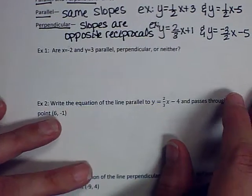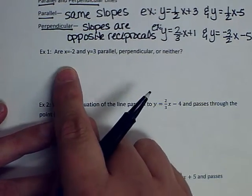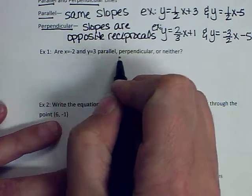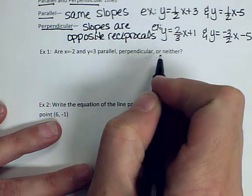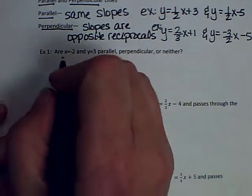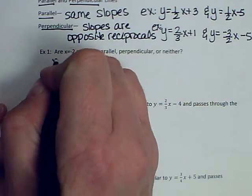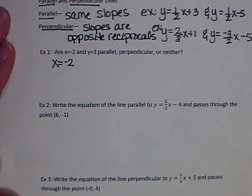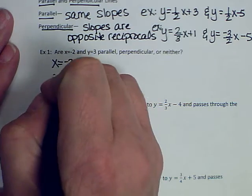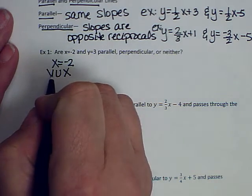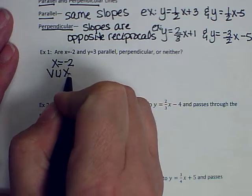The first example: are x equals negative 2 and y equals 3 parallel, perpendicular, or neither? I'm going to think about x equals negative 2 — I know that it is a VUX problem. VUX stands for vertical, undefined slope, x equals a number. If I sketch this, it's a vertical line, straight up and down.